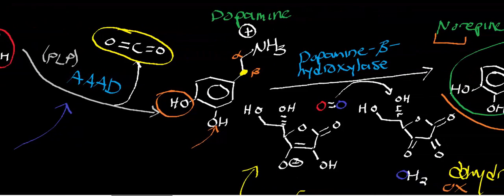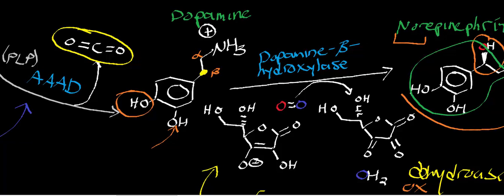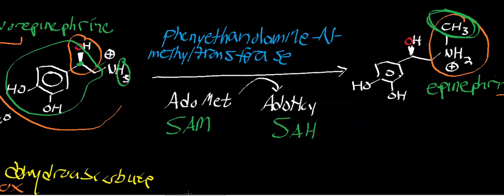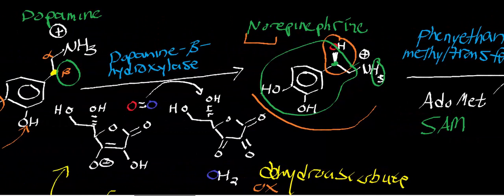Dopamine is synthesized in large amounts by cells of the nucleus accumbens and substantia nigra. In cells that produce norepinephrine and epinephrine, dopamine gets consumed by dopamine beta-hydroxylase, facilitated by oxidizing ascorbate into dehydroascorbate with loss of water. This hydroxylates the beta position on dopamine to make norepinephrine, and notably a chiral center is generated. Dopamine beta-hydroxylase would be expressed in cells that make both epinephrine and norepinephrine.